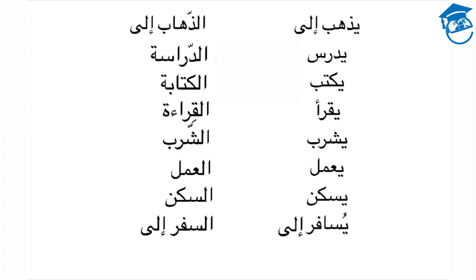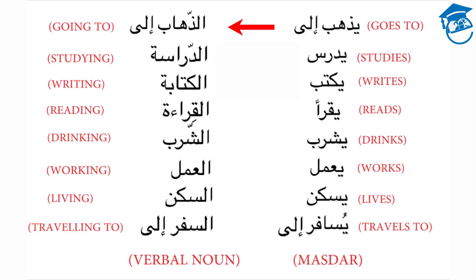Now let's look at some examples of form one verbs and their masdar. In the first one, we have yathabu ilah — he goes to. The masdar or verbal noun is al-dhahab ilah — going to. Yadrusu — he studies. The verbal noun or masdar: al-dirasa — studying.